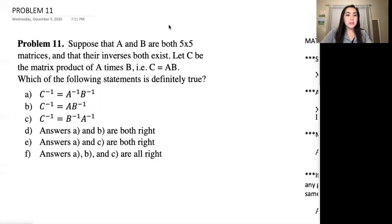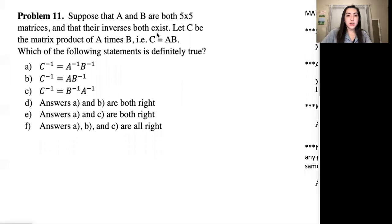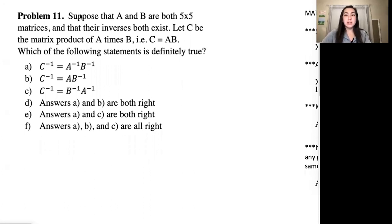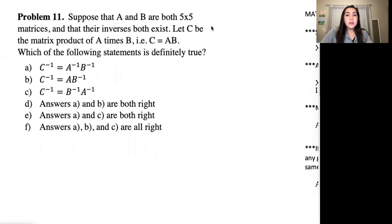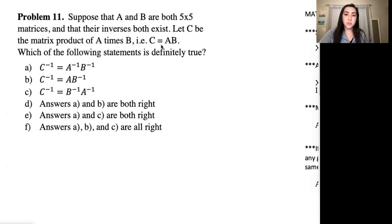Hey guys, I was doing this problem in a past session and it got a little bit crazy, so I've organized everything and we'll walk through it here. This problem says suppose that A and B are both five by five matrices and that their inverses both exist. That basically tells us you can multiply them together. Their inverses both exist, you can multiply the inverses together. Let C be the matrix product of A times B, so C equals A times B — and that's going to be really important.